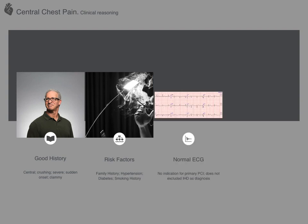He's got a normal ECG — but does this mean it couldn't be ischaemic heart disease? It doesn't. All this tells us is that he doesn't need primary PCI — percutaneous coronary intervention — which is our way of saying emergency intervention. It does not exclude ischaemic heart disease, acute coronary syndrome, or a myocardial infarction.